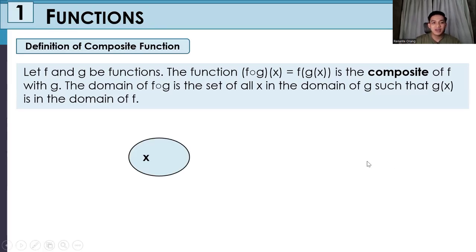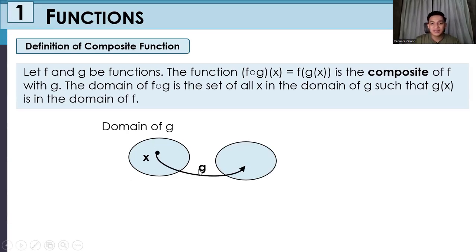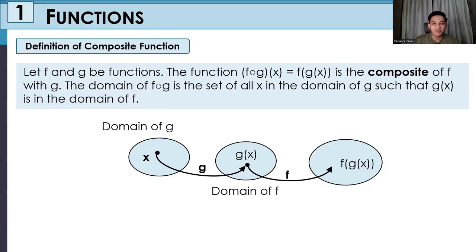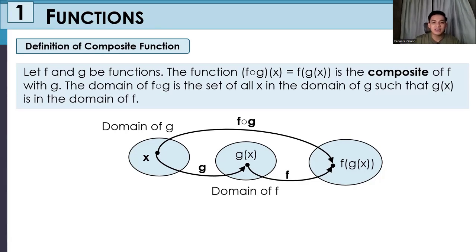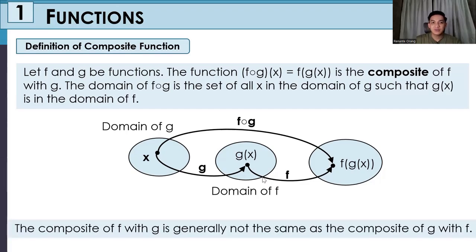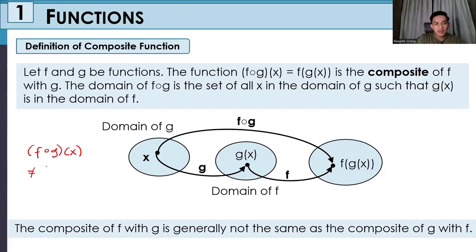To explain this, we have our diagram. We have our x which is the domain of g, with our different values of x. We substitute x into g, giving us g of x, and then the value of g is substituted into f — that is the domain of f. So this is a function within a function. We must first determine g of x and then substitute its value into f of x. Take note that the composite of f with g is generally not the same as the composite of g with f — that is, f of g of x is not equivalent to g of f of x.